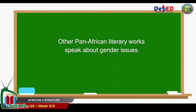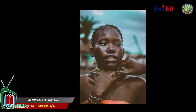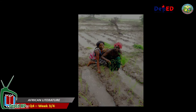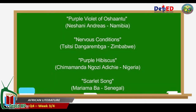Other pan-African literary works speak about gender issues — there was a perspective shift from the oppression of the black man and his struggles for liberation to the oppression of the black woman and her struggles for equality. African societies also have that male superiority stigma like societies in other continents. Examples of feminist African literature include Nigerian writer Buchi Emecheta's novels Joys of Motherhood (1979) and Second Class Citizen (1974). Other works challenging gender bias and racial imbalance include Purple Violet of Oshaantu by Namibian author Neshani Andreas, Nervous Conditions by Zimbabwe's Tsitsi Dangarembga, Purple Hibiscus by Nigerian Chimamanda Ngozi Adichie, and Scarlet Song by Senegalese Mariama Bâ.